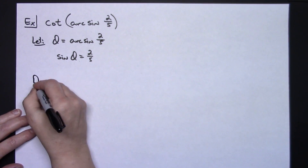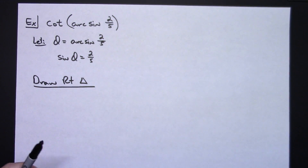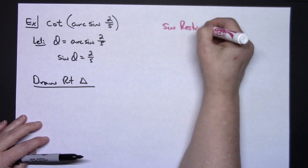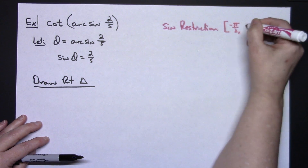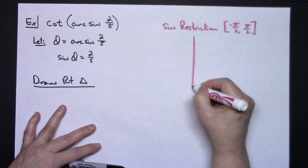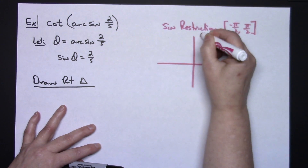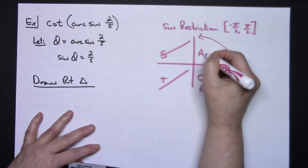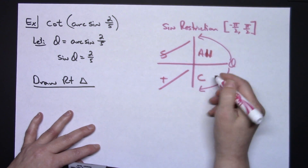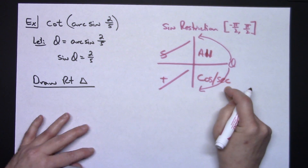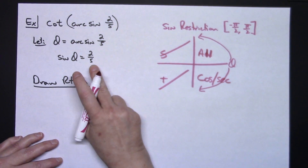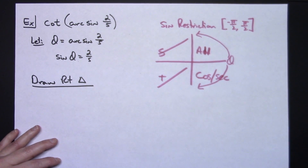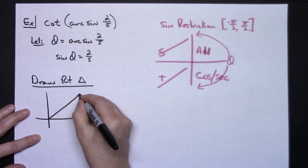I need to draw my right triangle, but let's do some thinking first. For this one I need to look at my sine restrictions: the closed interval from negative pi over 2 to pi over 2. Drawing a coordinate plane, that means theta falls in quadrant one or quadrant four — not quadrant two or three. Using 'all students take calculus': all trig functions are positive in quadrant one, and cosine and secant are positive in quadrant four. I have sine with a positive 2/5ths, so since sine is negative in the fourth quadrant, it can't be there. This example ends up in the first quadrant, so I draw the right triangle in the first quadrant.